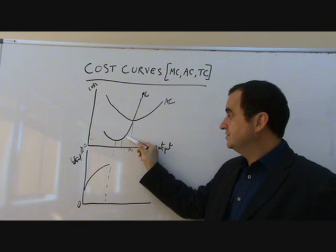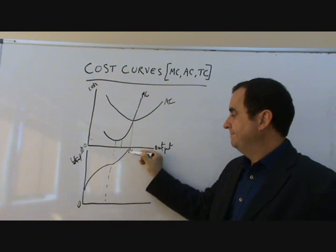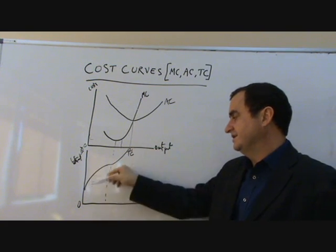Until this point, it will be rising but less and less steeply because the extra cost is falling. Beyond this point, when the extra cost of each additional unit is rising and rising, this picks up. And so we have this funny kind of curve.